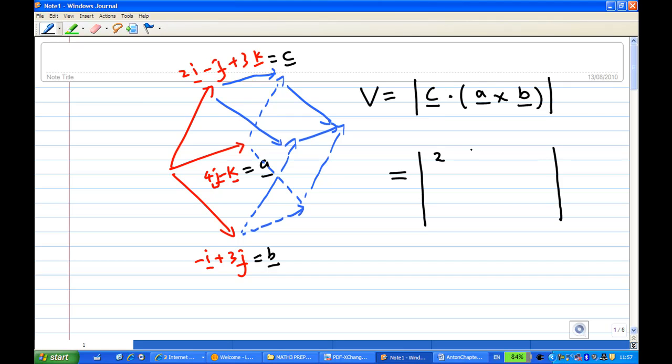This is 2, minus 1, 3, and then a is 0, 4, minus 1 (0i, 4j, minus k). And where c is 2i minus j plus 3k, and b is minus i plus 3j and 0k. So we're going to find out what is this 3 by 3 determinant.